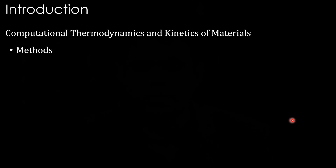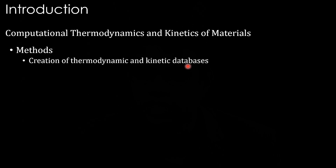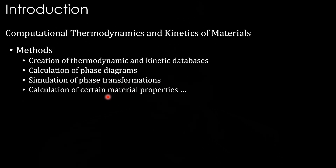By what methods are these achieved? Creation of thermodynamic and kinetic databases is where everything starts. If this information — kinetic databases, thermodynamic databases — is available, it is easy for one to use it and predict or understand material behavior. But if they are not available, one has to generate them. That is what creation of thermodynamic and kinetic databases means, and it is part of the computational thermodynamics technique. We can also calculate phase diagrams, simulate phase transformations, and calculate thermodynamic material properties and those directly derived from them.